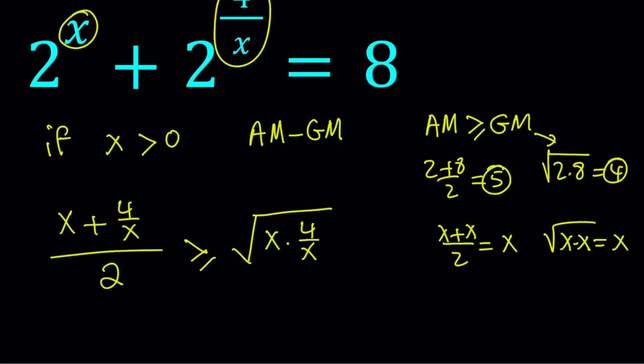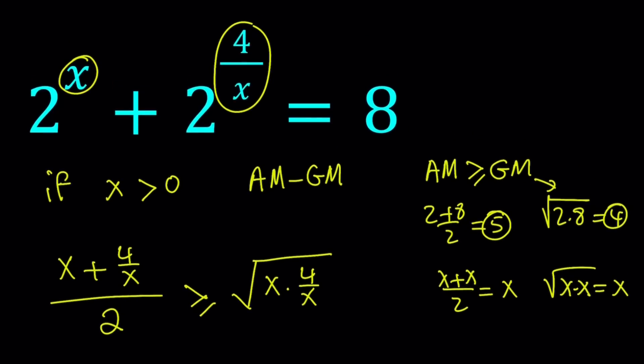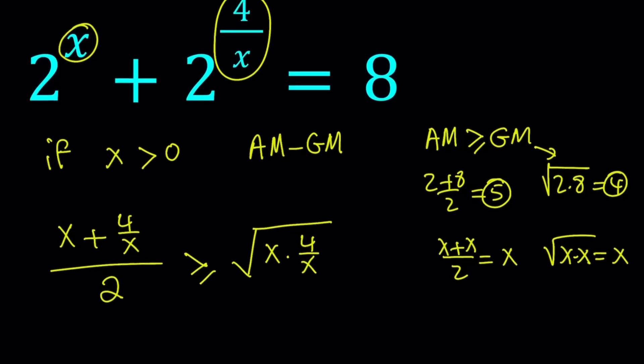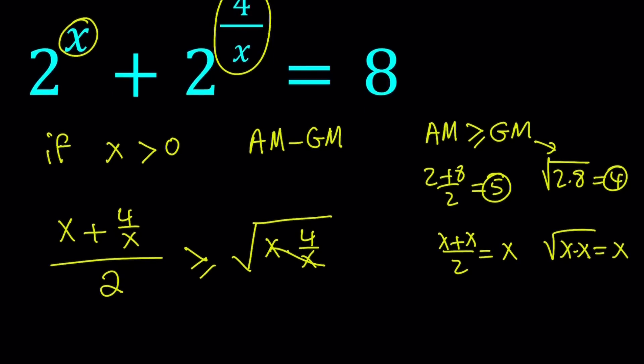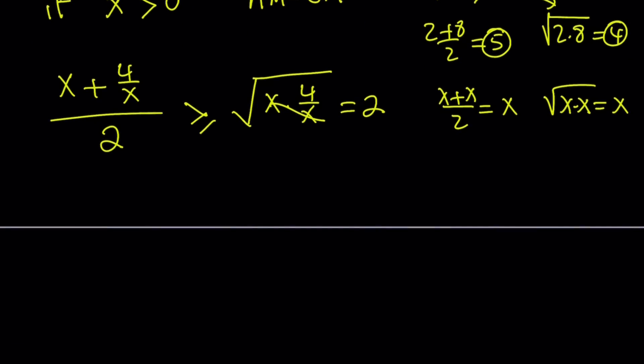So we're going to multiply x and 4 over x and take the square root. This is nice because x is going to cancel out. That's actually a good sign to use AM-GM, especially if you have terms that cancel out. So that cancels out, leaving us with a 2.